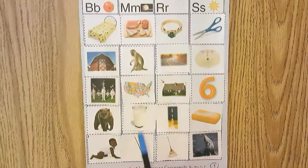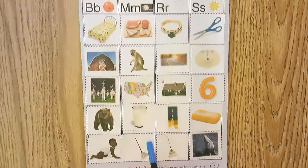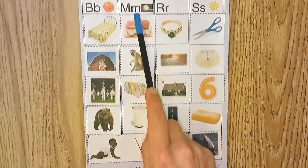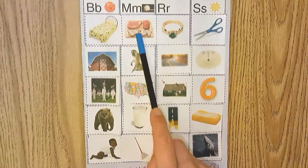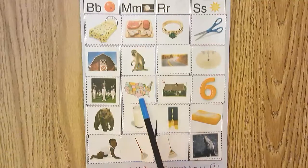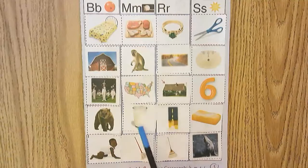These pictures here, I don't care which order you have them from top to bottom, but they all need to be in this column because they all start with the sound M. Let's read them together. Meat, monkey, map, milk, mop.